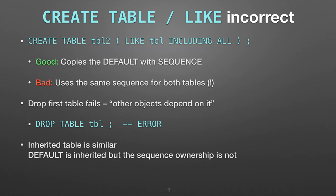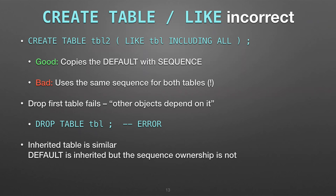Another issue: you can create a table based on another table using the LIKE command. What happens is it does bring the sequence over, but it uses that same sequence for both tables. Now both tables are using the same sequence of numbers, so neither one is getting the full set of numbers. The other thing is you can't drop the first table — you'll get an error saying there are other objects, because now they're all kind of meshed together. This is a bad, bad, bad situation.